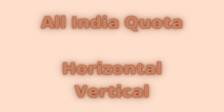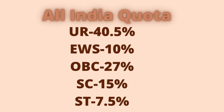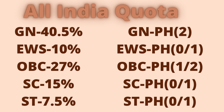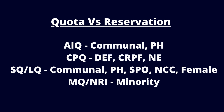Let's talk about All India Quota. All India Quota has both horizontal and vertical reservation. 40.5% of the seats are unreserved, 10% seats are reserved for Economically Weaker Section, 27% seats are reserved for OBC, 15% is reserved for Scheduled Caste and 7.5% is reserved for Scheduled Tribe. Physically disabled reservation is 5%, given as inner reservation. For example, if a medical college has 100 seats, 2 seats will be available under General PH category, 0 or 1 seat under EWS PH category, 1 or 2 seats under OBC PH category, and 0 or 1 seat in SC or ST PH category.